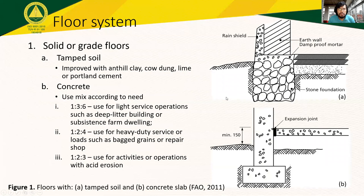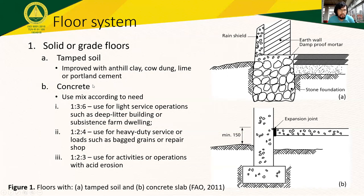Solid grade floors can be simply tamped soil. As shown in Figure 1a, we have the soil and on top of it is the base course and two levels of tamped soil. The tamped soil can be improved using ant hill clay, caudang, lime, or Portland cement.